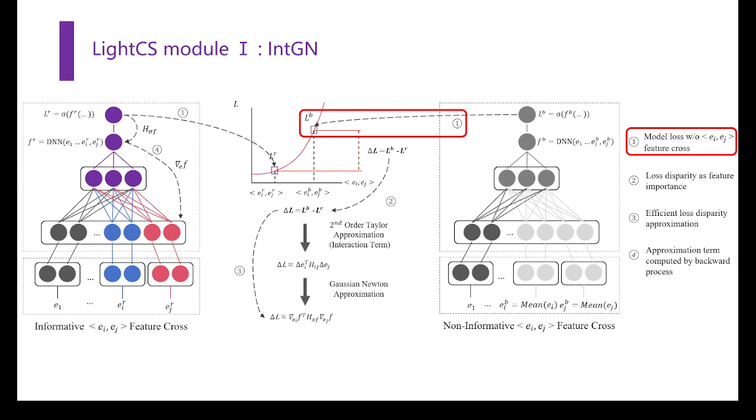from informative to non-informative with mean embedding. The loss degradation caused by this operation, an element of the Hessian matrix, can stand for the importance of the feature cross composed of the two single features.